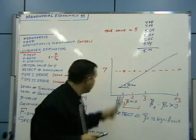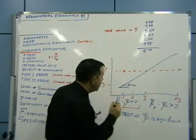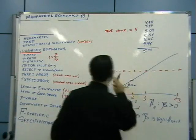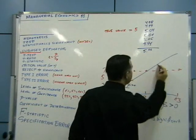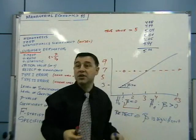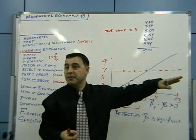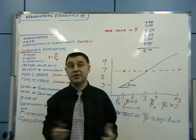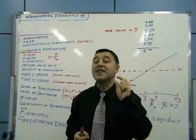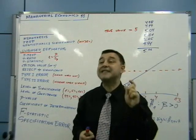If beta is positive, fertilizing with 1 kg gives an expected value of 3, with 2 kg you get 5, with 3 kg you get 7, with 4 kg you get 9. You run your first experiment and get one estimate of beta, the second experiment gives a different estimate, the third gives yet another. Your estimates themselves will be random and will have a standard error.